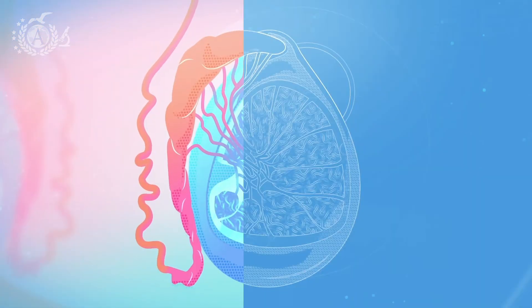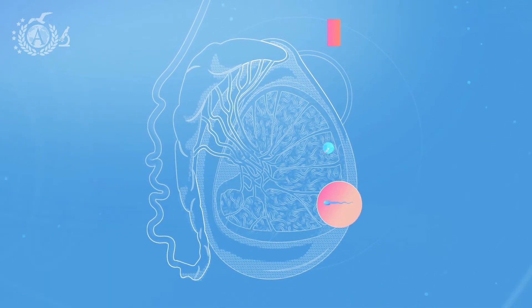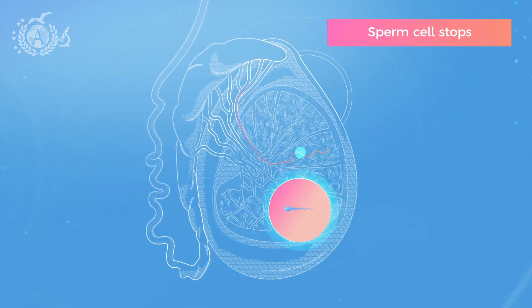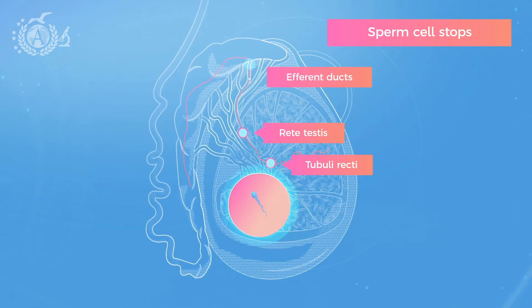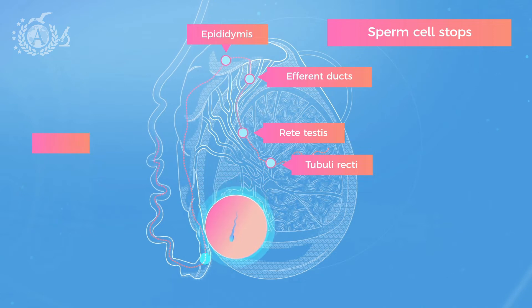However, testis isn't the only structure required for the production of male gametes. The sperm cell, once out of the male gonad, needs to mature quite a bit. Therefore, it has to migrate out of the testis in order to acquire all the characteristics required for the fertilization of the female oocyte.